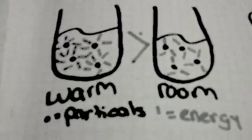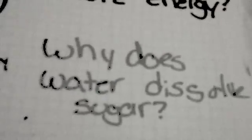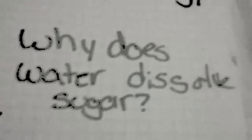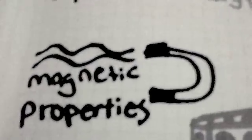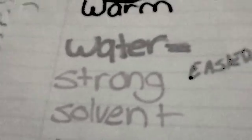Another question someone might ask is, why does water dissolve sugar? That is because water has magnetic properties. So it makes water a strong solvent. So it's easier for the water to dissolve the sugar, aka the solute.